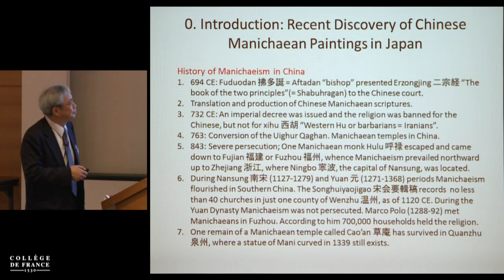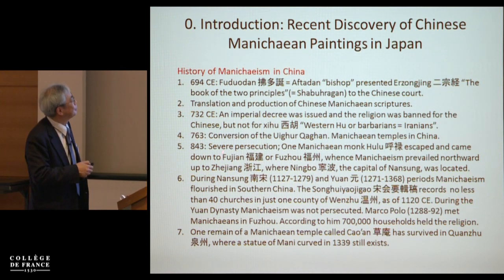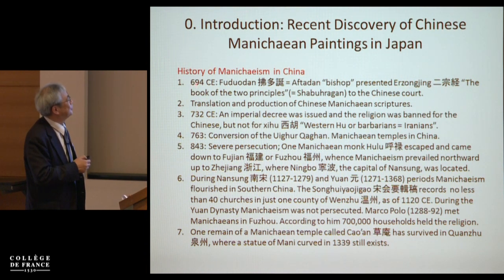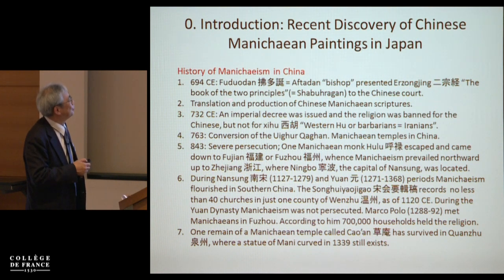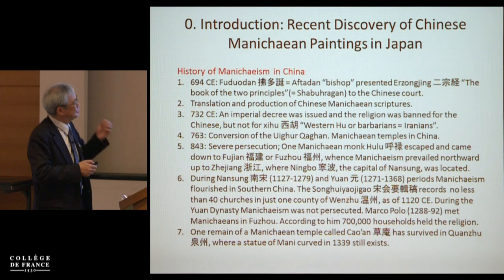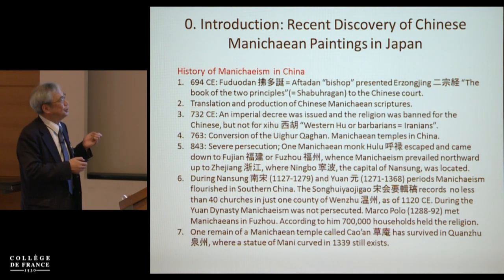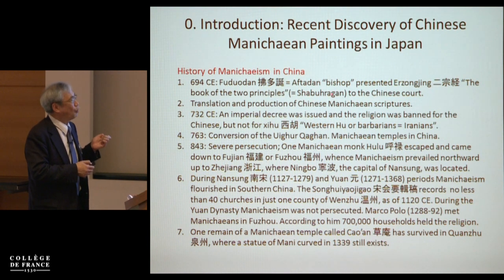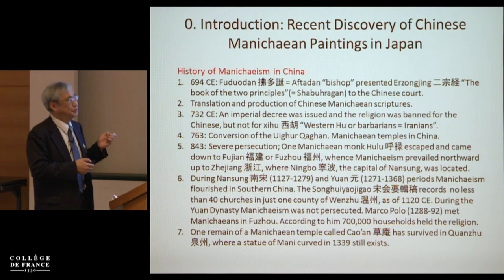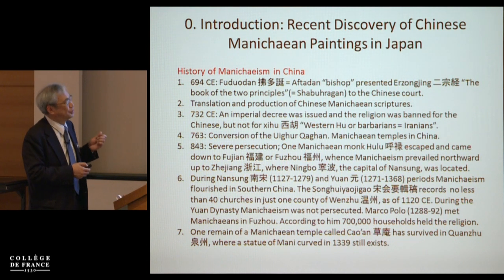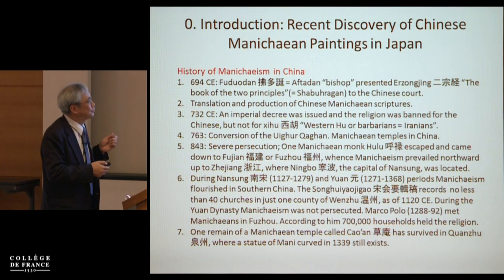Let us see, at first, the brief history of Chinese Manichaeism. It entered China — the earliest record is 694 — when Fu Zuo Dan, a bishop, presented the sutra or text, the Er Zong Jing, the Book of the Two Principles. It is generally regarded as the Chinese Manichaean version, a Middle Persian text produced by Mani to teach his doctrines to the Sassanian emperor Shapur — that is why it is called Shabuhragan.